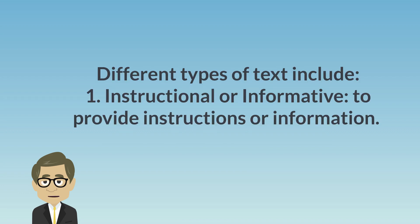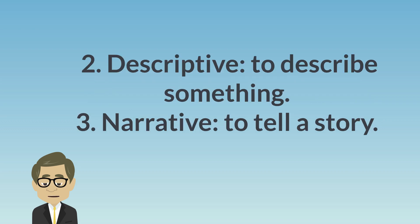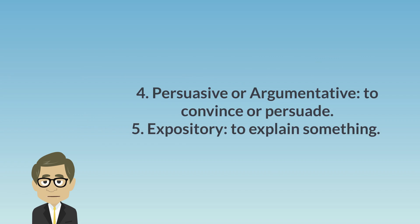Different types of text include: 1. Instructional or informative — to provide instructions or information. 2. Descriptive — to describe something. 3. Narrative — to tell a story. 4. Persuasive or argumentative — to convince or persuade. 5. Expository — to explain something.